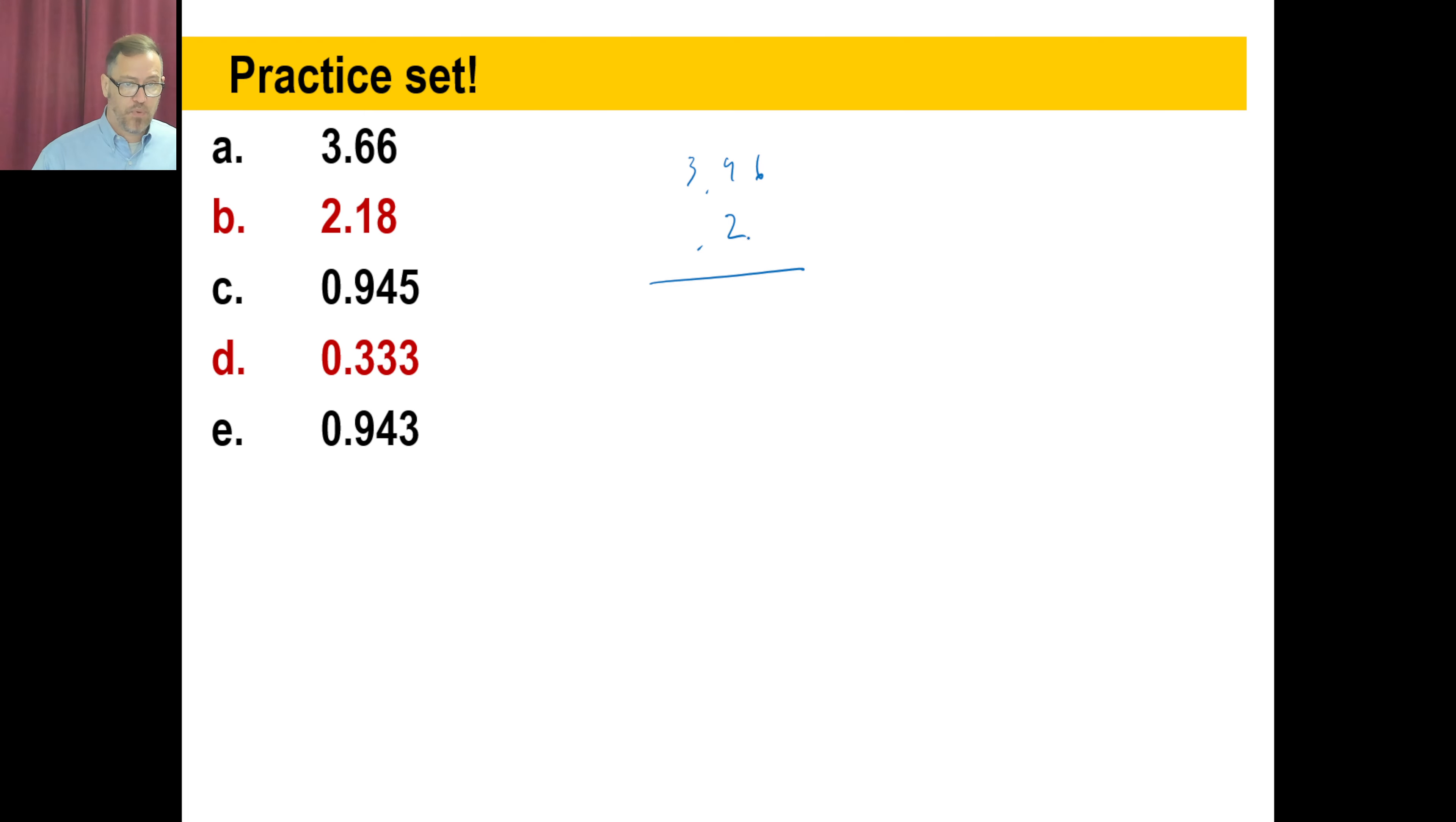All right. 0.333. Pause it and try E. Okay. You should have gotten 0.943. Pause it and try F. All right. 0.03 is F. Pause it and try G.